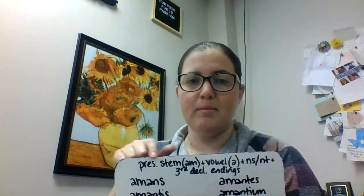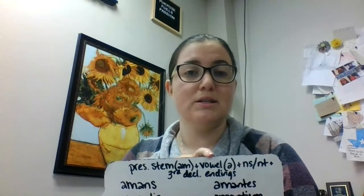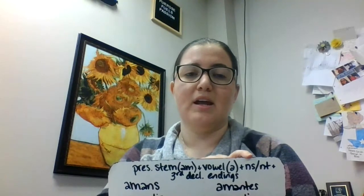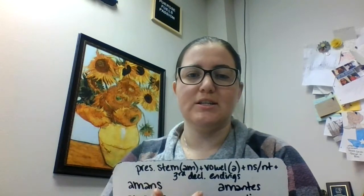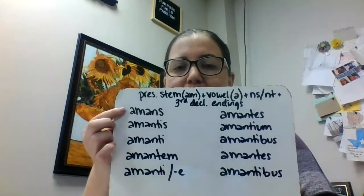Our first one is our present active participle for amo/amare, and we were doing this one just for masculine and feminine. We reviewed our formula for the participle. The formula is going to be your present stem — which here is 'am' — your vowel, which is the same as your imperfect middle vowels, so it's an 'a', and then 'ns' for the nominative, 'nt' for all the other ones, and third declension endings.